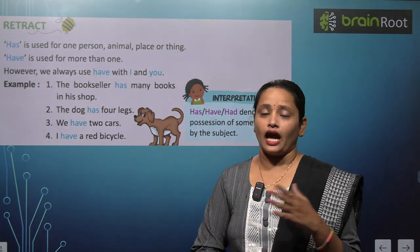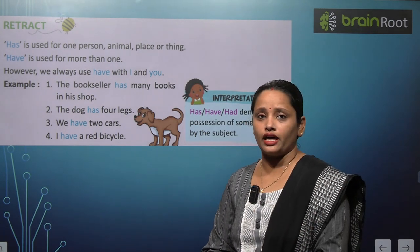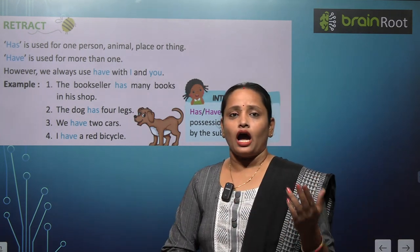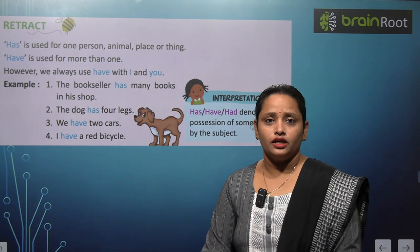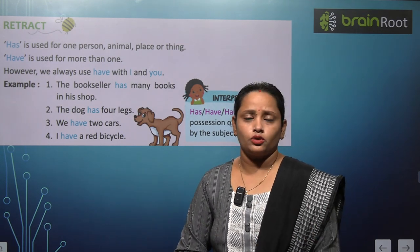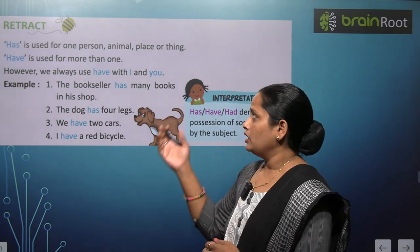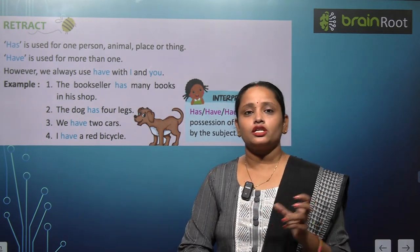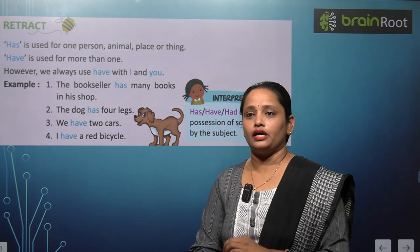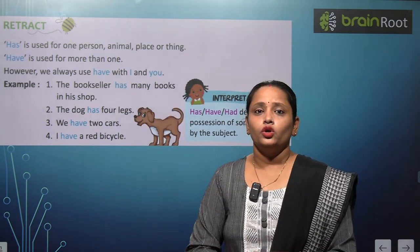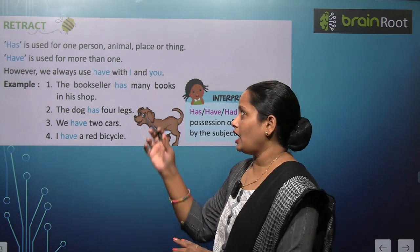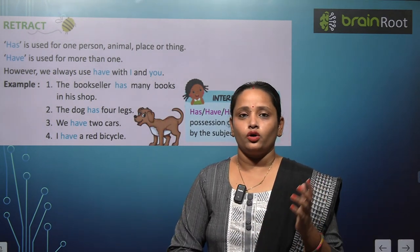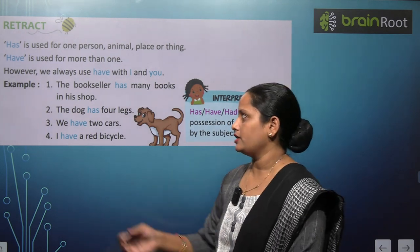Ab humne pada ki has singular ke liye use hota hai, have plural ke liye use hota hai. Ab aap mujhse kahoge ki I to singular hai, you bhi ek single person ko kehte hain — toh yahaan pe have kio use kar rahe hai? Children, this is the rule: have ko hamesha I aur you dono ke saath use karna hai. I aur you ke saath have use karna hai.